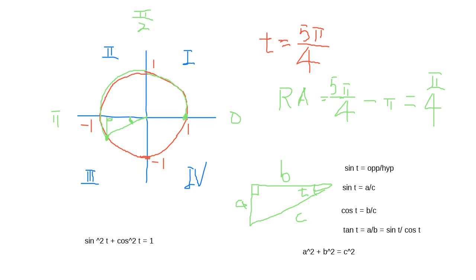So now we know trigonometry is all about right triangles. When we have a triangle, we define sine as a ratio of the sides, cosine as a ratio of the sides — talking about the ratios of the sides.